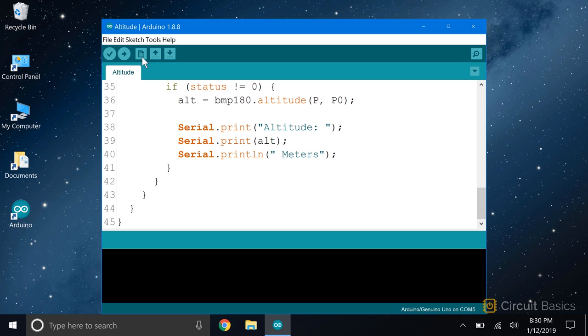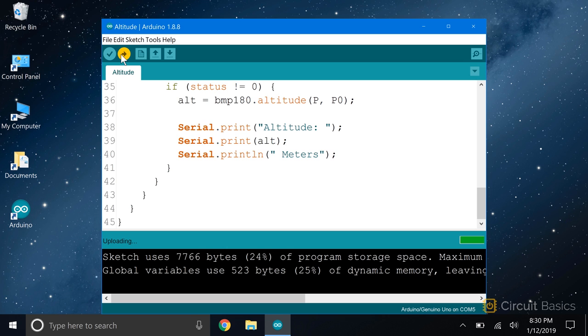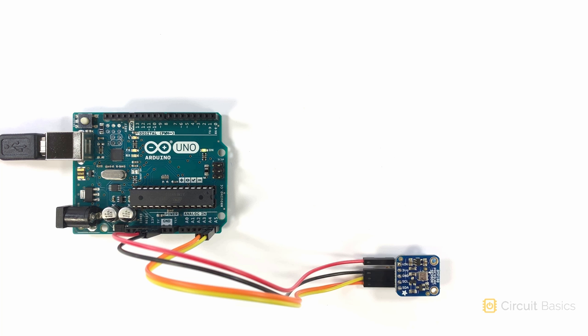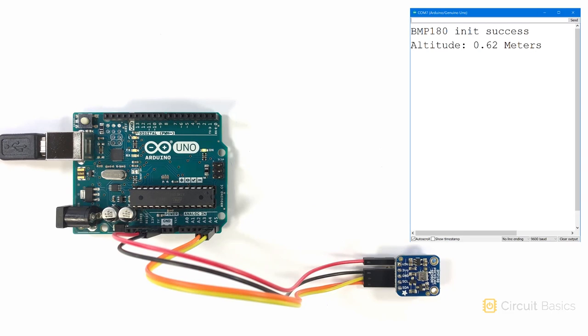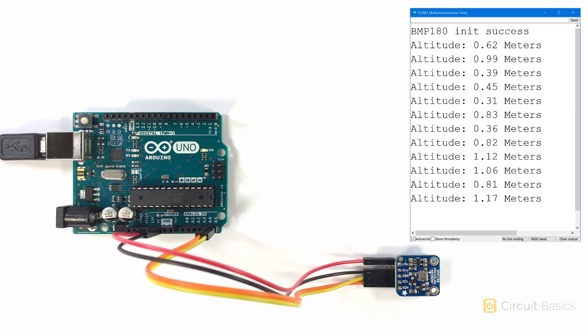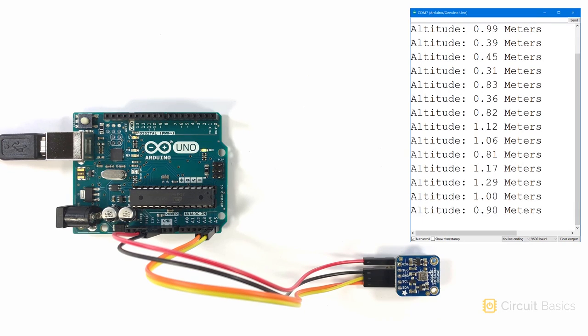Okay, let's check this out. So I have my BMP180 connected here. We're already getting some altitude measurements coming through. I have my Arduino on a table right now, which is about one meter off the ground, so these numbers are about right. Alright, so this is my altitude from the ground, since I set my P0 equal to the pressure I measured close to ground level. Now I'm going to show you how to measure altitude relative to sea level.